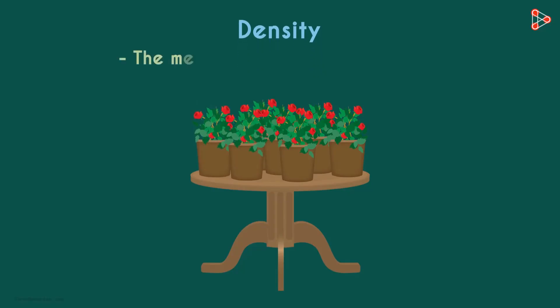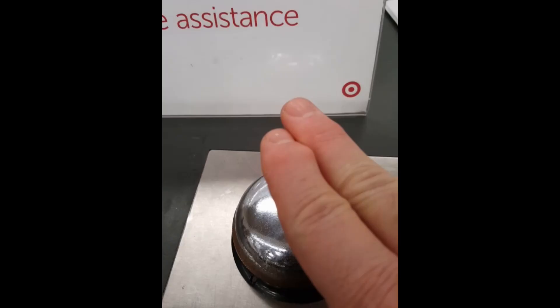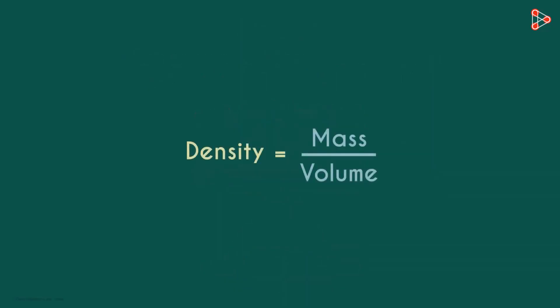Density is simply the measure of how compact the mass in a substance or object is. It's mass per unit volume. Finally a correct statement. No need to ding you, Anthony. I think you must have read that from Wiki.